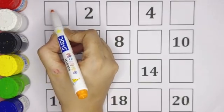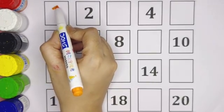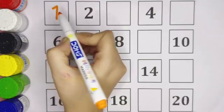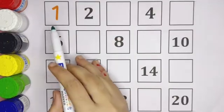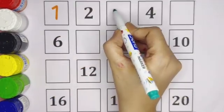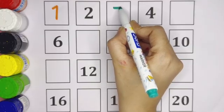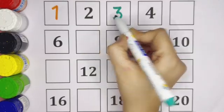One, this is number one. Two. Now the missing number is three, number three.